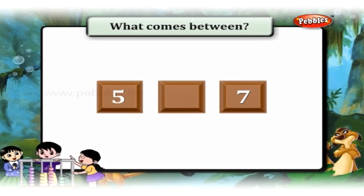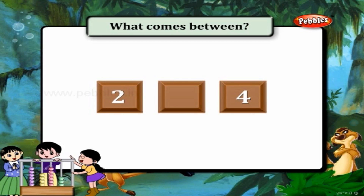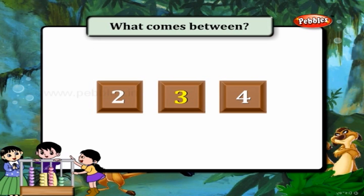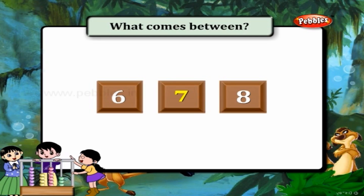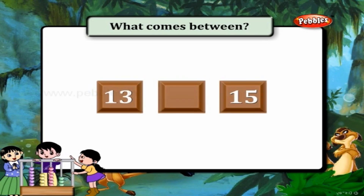What comes between? What will come between 5 and 7? It is 6. What will come between 2 and 4? Yes, it is 3. Now you tell me, what will come between 6 and 8? Yes, 7 will come. What will come between 8 and 10? It is 9. What will come between 13 and 15? Yes, it is 14.